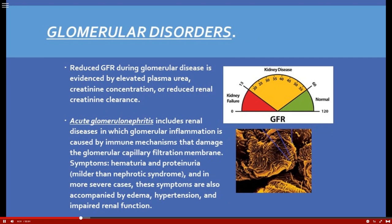With glomerular disorders, you'll see red blood cell casts in the urinalysis — whenever you see those, start thinking about what's going on with the glomeruli. Reduced GFR during glomerular disease is evidenced by elevated plasma urea and creatinine concentration, or reduced renal creatinine clearance. The kidneys are unable to clear urea, so you'll see increased serum levels but decreased creatinine in the urine.